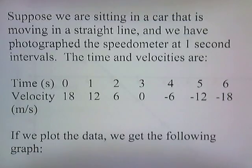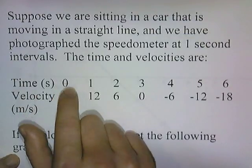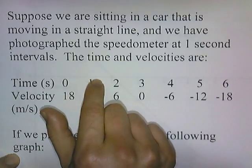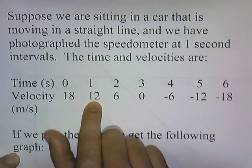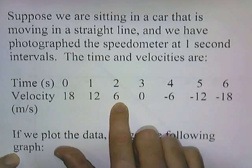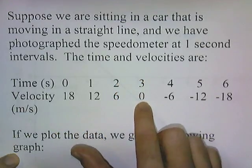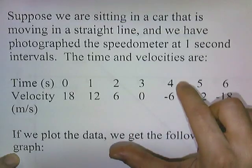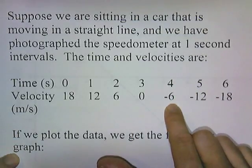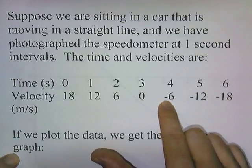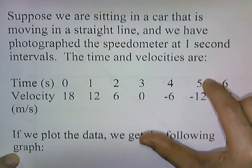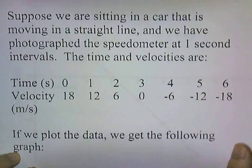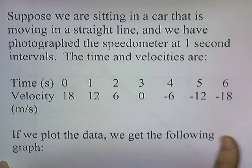Now suppose we're sitting in a car moving in a straight line, photographing the speedometer at one-second intervals. At time 0, the car is moving at 18 meters per second. One second later it's at 12 meters per second, two seconds later at 6 meters per second, and at 3 seconds the velocity is 0 — the car has stopped. At 4 seconds it's going negative 6 meters per second, meaning 6 meters per second in the opposite direction, and at 5 seconds it's at negative 12 meters per second. If we plot these data, we get the following graph.